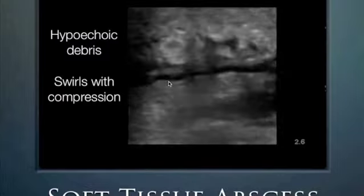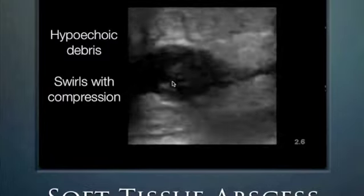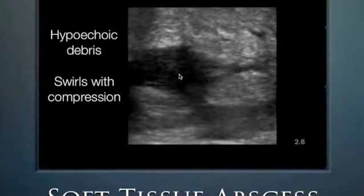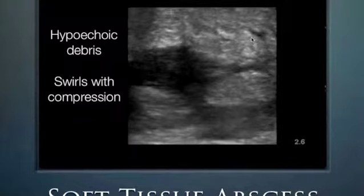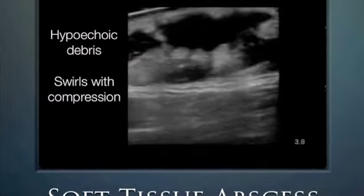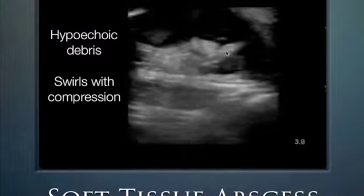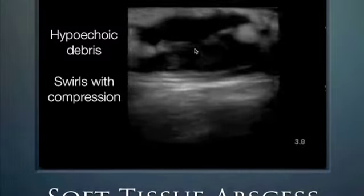Just another example of what an abscess looks like: hypoechoic debris, sometimes with a little cobblestoning of cellulitis in between abscess areas. This is all what pus looks like under ultrasound. The patient clearly has a very prominent abscess, with some inflamed hypoechoic tissue consistent with overlying cellulitis.